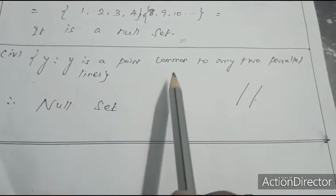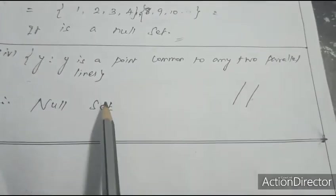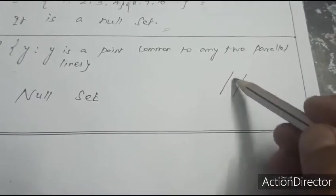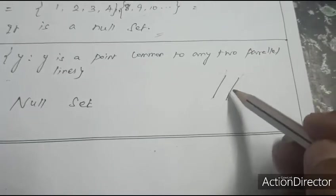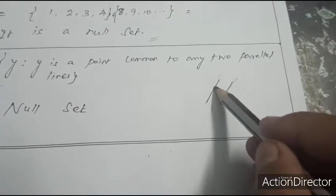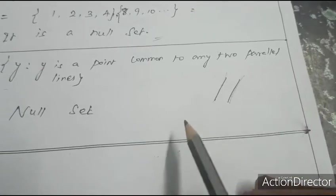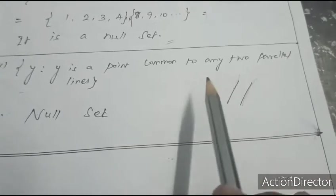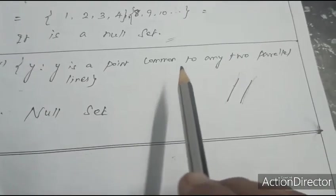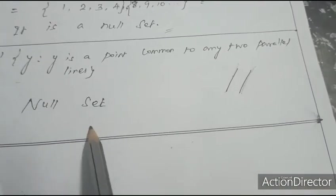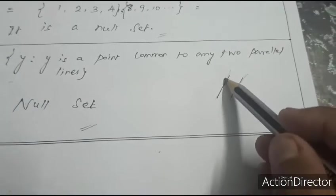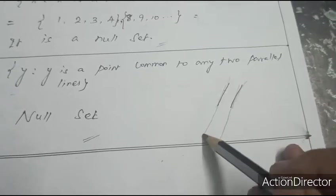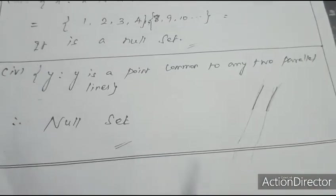Fourth question: the set of points common to any two parallel lines. Parallel lines do not have any common point; they never meet. Therefore there is no common point, so it is a null set.